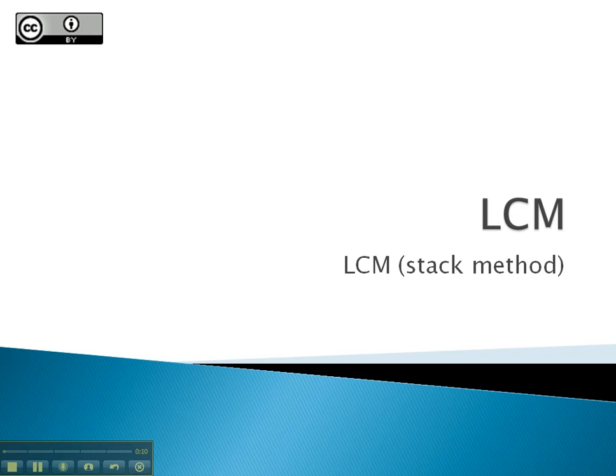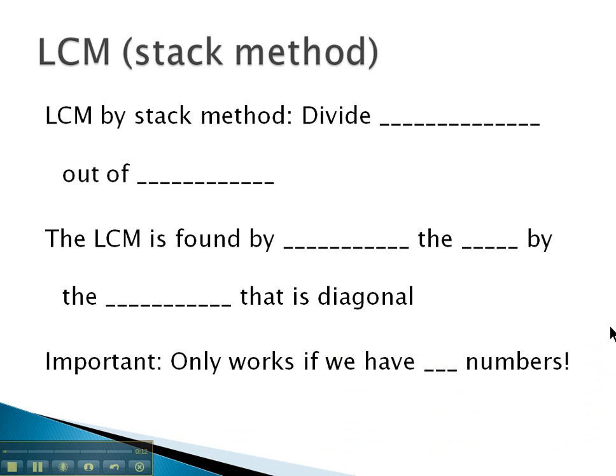There's two ways to do this. One method that we're doing here is called the stack method. To find the least common multiple by the stack method, we will divide common factors out of both numbers.